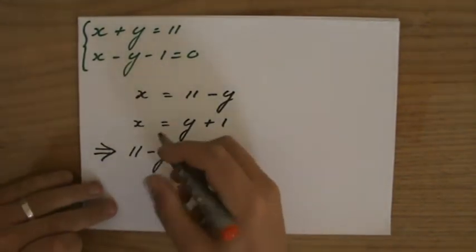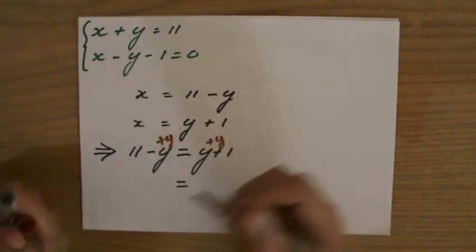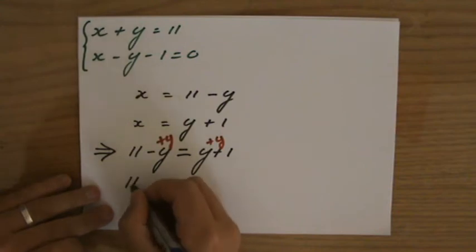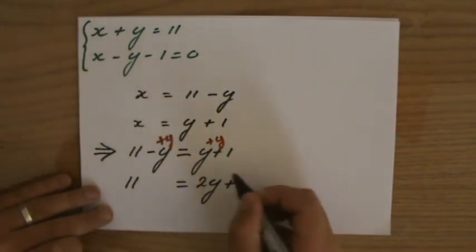Okay, and I always like to keep my variables positive if I can. So I'm going to plus it with y on both sides. 11, that's going to be 2y + 1. y + y.